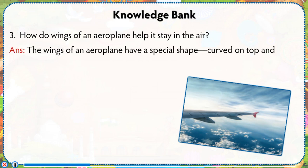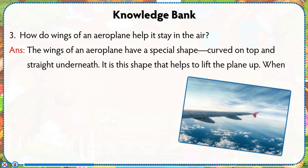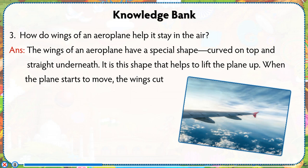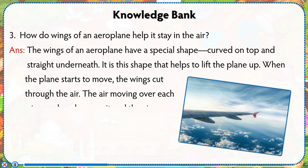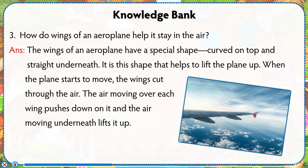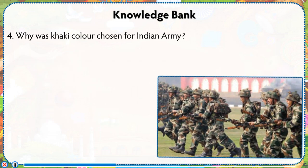How do the wings of an aeroplane help it stay in the air? The wings of an aeroplane have a special shape — curved on top and straight underneath. It is this shape that helps to lift the plane up. When the plane starts to move, the wings cut through the air; the air moving over each wing pushes down on it and the air moving underneath lifts it up.